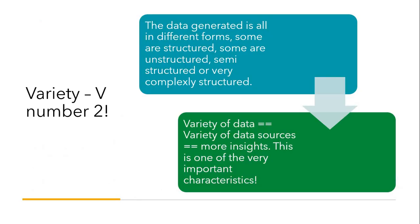The second V is variety. The data generated comes in different forms — some are structured, some are unstructured, some are semi-structured, and some are very complexly structured. The variety of data is directly proportional to the variety of data sources. More data sources means more types of data, and more insights. This is one of the most important characteristics to understand when getting into big data.